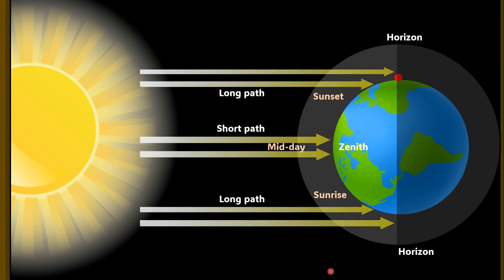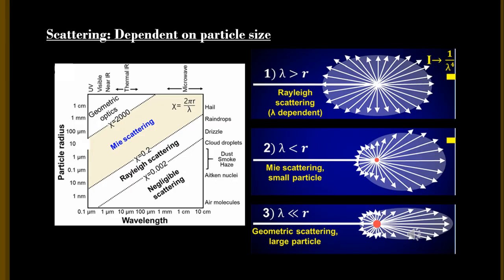When sunlight enters into the earth's atmosphere, it does not pass linearly — it experiences scattering due to the different sizes of particles like gaseous molecules, dust particles, water droplets, etc., which are suspended in the atmosphere. The different sizes of particles cause different types of scattering, like Rayleigh scattering, where the particle sizes are much, much smaller than the wavelength of the light it is interacting with.